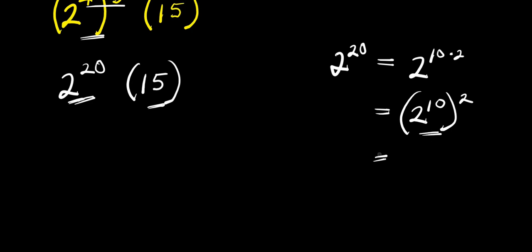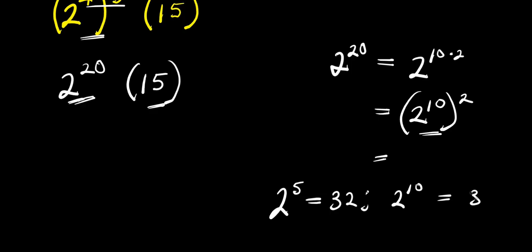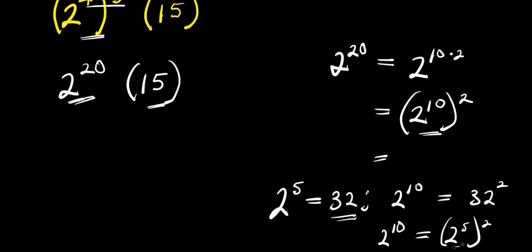Remember, 2 to the power of 5 is 32. So, 2 to the power of 10 would be 32 to the power of 2. Why? Because 2 to the power of 10 is 2 to the power of 5, raised to the power of 2. Have you seen it? So, if 2 to the power of 5 is 32, then we have 32 here. That's why we are having 32 to the power of 2.